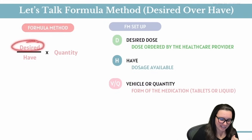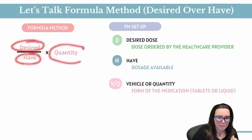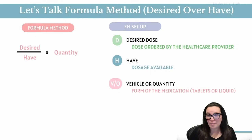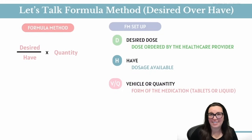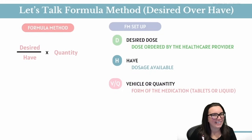Here's the formula that we use to calculate our dosage calculation magic: it's desired over have, multiplied by our quantity. Now that we've met all the players, let's plug them into scenarios to see how we calculate using this method.